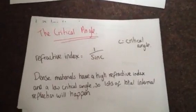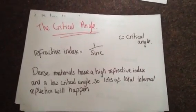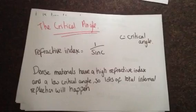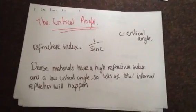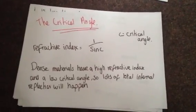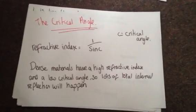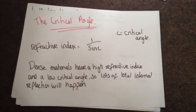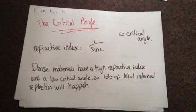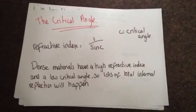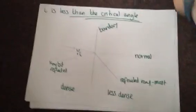A tiny bit of maths that you need to know: the critical angle. The critical angle, which is C, is easily worked out by taking the refractive index and then 1 over sin of C. Dense material — so plastic, glass or water — is going to have a high refractive index, so it has a low critical angle, meaning there will be lots of total internal reflection taking place.